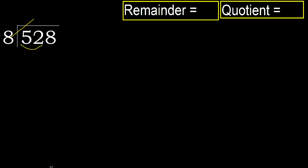But not greater. 8 multiplied by 7 is 56, which is greater. 8 multiplied by 6 is 48, which is not greater. Subtract: 52 minus 48 is 4. Next.